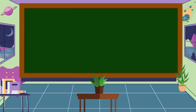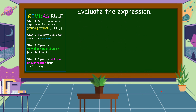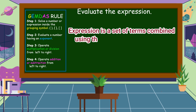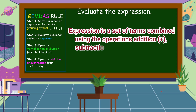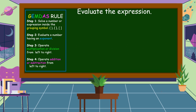To understand the GYMDAS rule, let's study the following examples. Evaluate the expression. When we say expression, it is a set of terms combined using the operations addition, subtraction, multiplication, division, or grouping symbols.